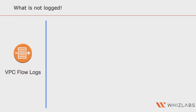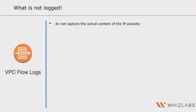Now let's look at what is not captured by VPC Flow Logs. There are certain types of traffic that are not logged. Specifically, VPC Flow Logs do not capture the actual content of the IP packets, so any data that is encrypted or hidden within the packet payload will not be visible in the logs.